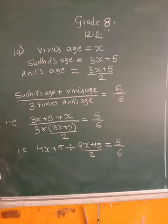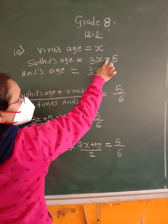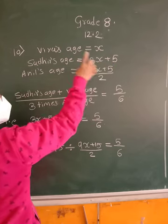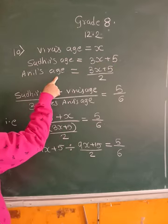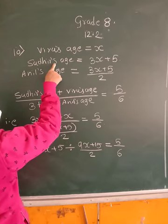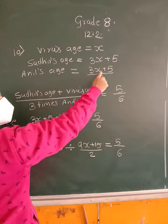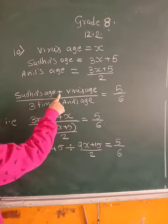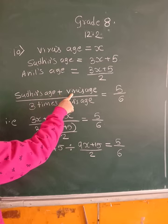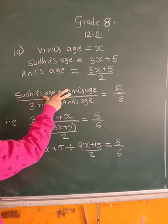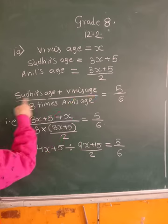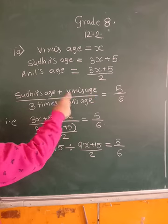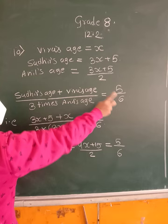So Sudhir's age is 3 times Viro's age and that we add 5, because it is 5 more than 3 times. 5 more than 3 times the age of Viro. And Anil's age is half of Sudhir's age. So Sudhir's age is 3X plus 5 divided by 2. Then the ratio is 5 upon 6.